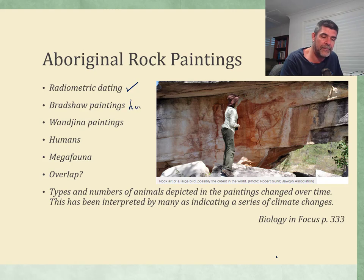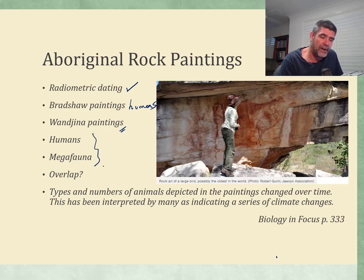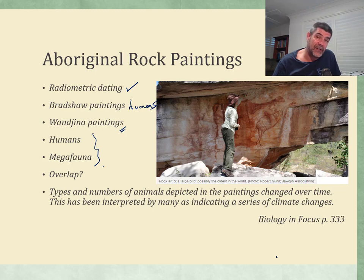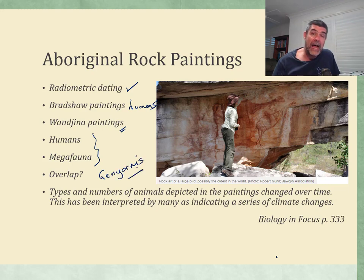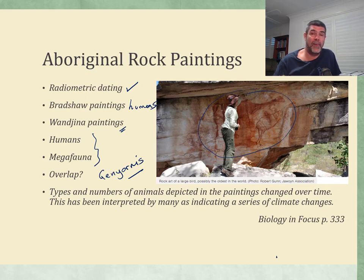Particularly if there are a lot of humans depicted — there's a lot of humans depicted in the Bradshaw paintings, and there's a little bit of controversy around that which we will look at in class. The Wanjana paintings is a really important group as well. From the Wanjana paintings, we've started to get an idea of that overlap between humans and the megafauna. How much overlap was there? How far back? How old are some of these rock paintings? What sort of organisms are present? One of the things being suggested is the presence of a large bird like Genyornis — a large bird associated with the Australian megafauna that is now extinct — and it's possible that there may well be depictions of Genyornis and other components of the Australian megafauna as part of Aboriginal rock paintings.